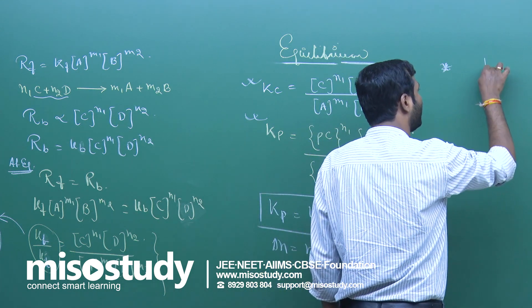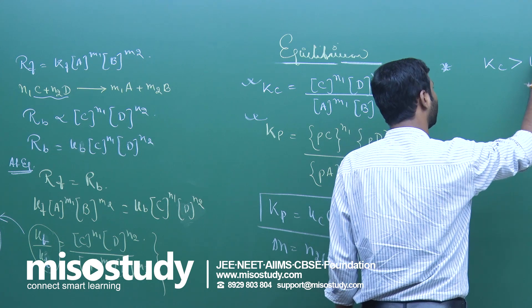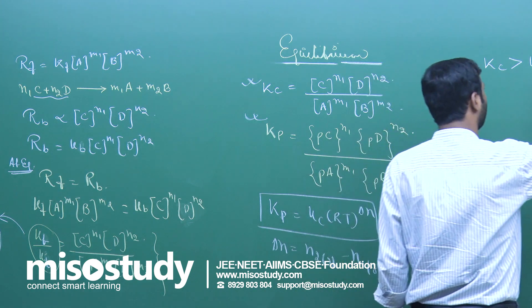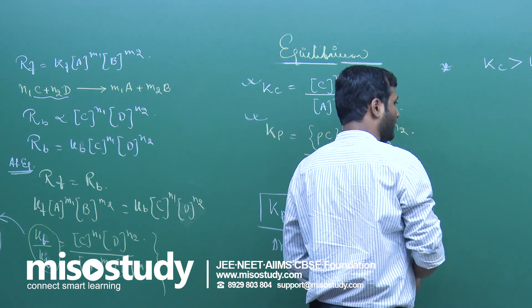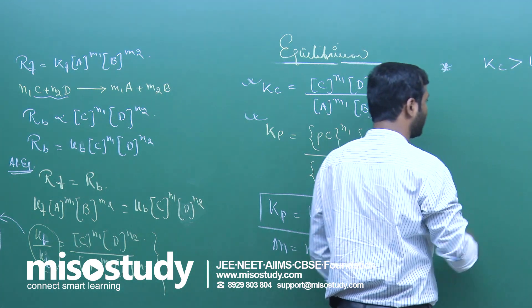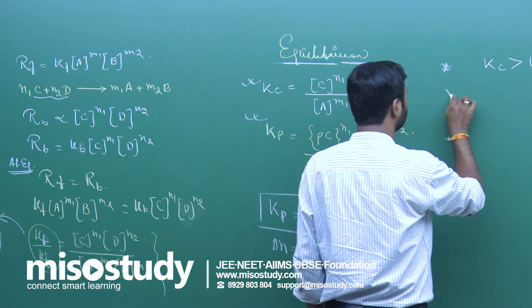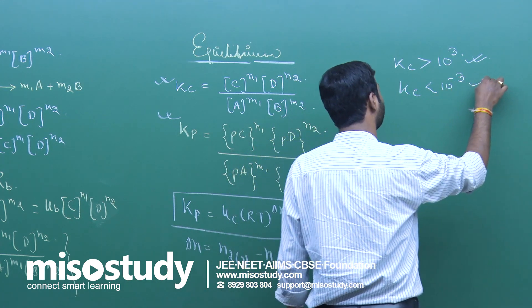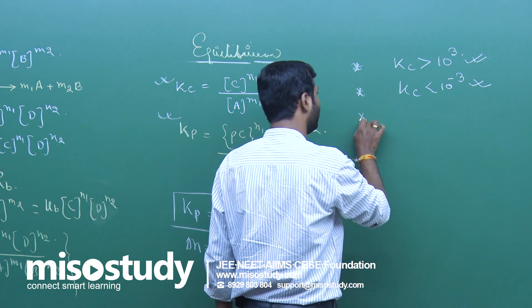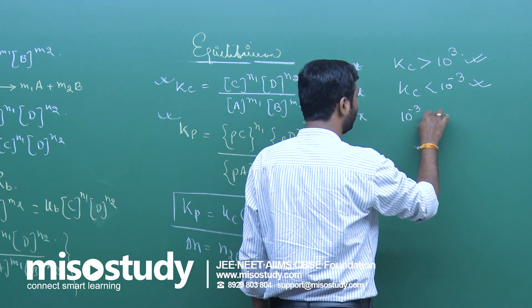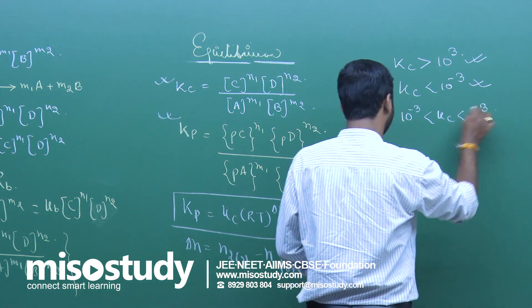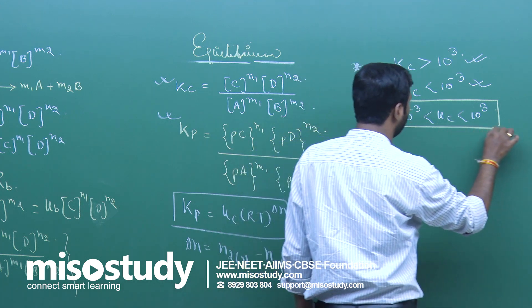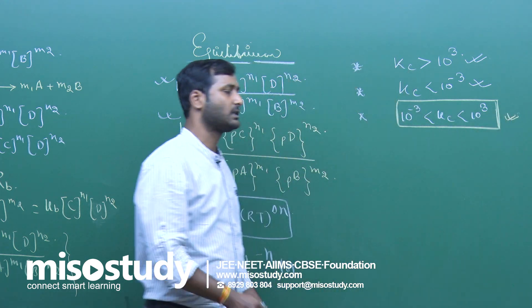If the value of KC is greater than 10^3, the forward reaction is dominant — meaning there is more concentration of product and the reaction goes to completion. When KC is less than 10^⁻3, the reaction barely proceeds. Generally, when KC lies between 10^⁻3 and 10^3, appreciable amounts of both reactant and product are present at equilibrium.